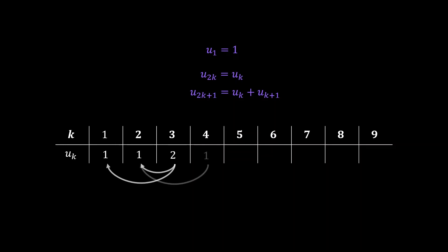So for example u4 is equal to u2, u5 is u2 plus u3, u6 is equal to u3, u7 is u3 plus u4, and so on.